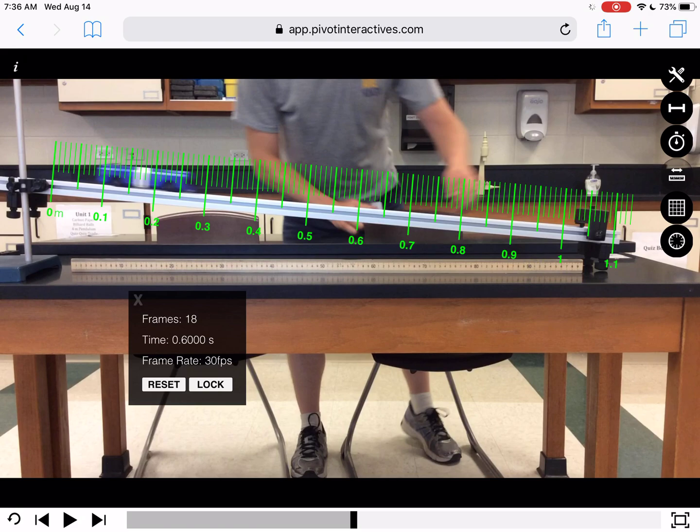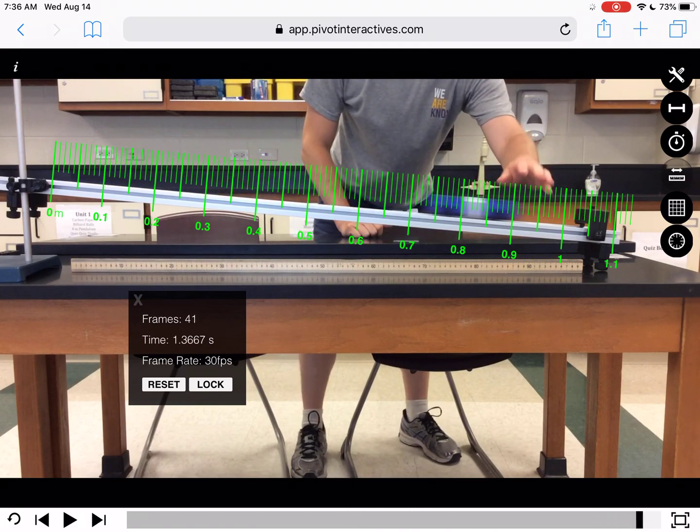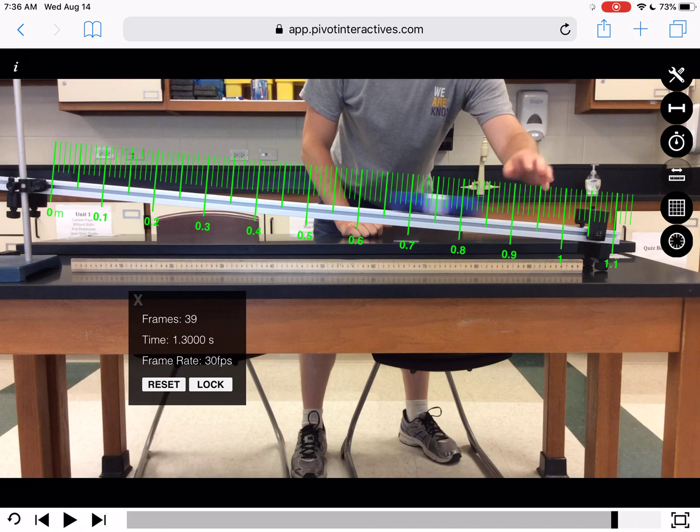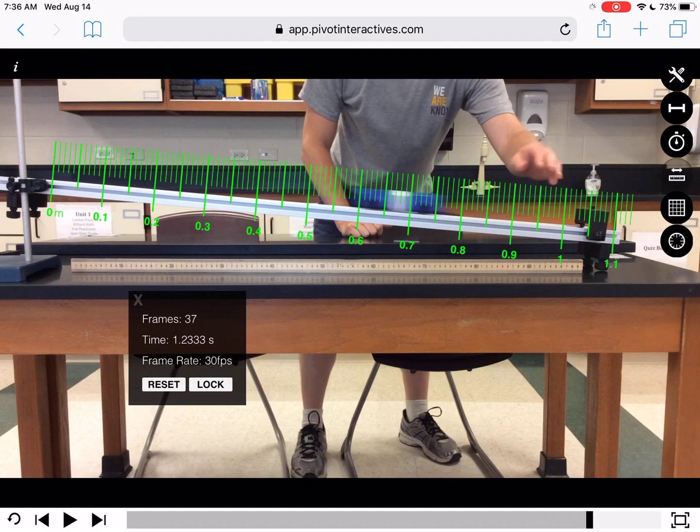And I would just continue that all the way along. That would give me about seven data points. What I might choose at the end is to instead of every 0.2 seconds do every 0.1 seconds, because it looks like it's moving a little bit faster over here and I could get some more data points at this end here. But that's up to you and it's going to just depend on your video.